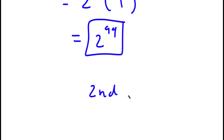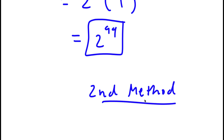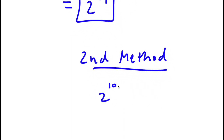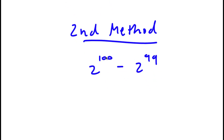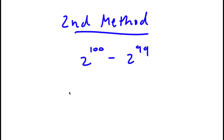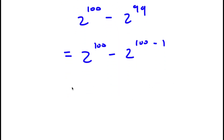Now I actually have a second method of solving this problem. So my problem was 2 to the power of 100 minus 2 to the power of 99. However, this time instead of changing 100 to 99 plus 1, I'm going to change 99 here to 100 minus 1. So now I have 2 to the power of 100 minus 2 to the power of 100 minus 1, which I can rewrite as 2 to the power of 100 minus 2 to the power of 100 plus negative 1.